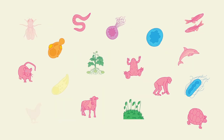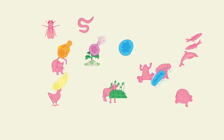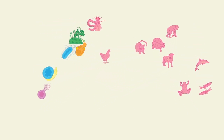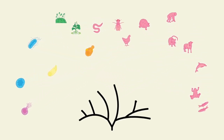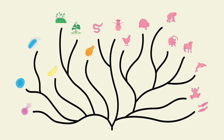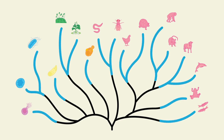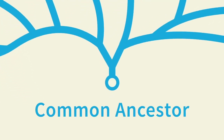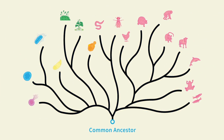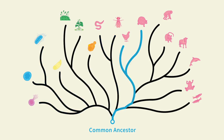But evolutionary relationships are different. To show how living things are related, scientists organize them into branching tree diagrams. Since living things share so many fundamental characteristics, the underlying assumption is that they all descended from a common ancestor. And the branches are a best guess at how the living things at the tips are related through reproductive lineages.